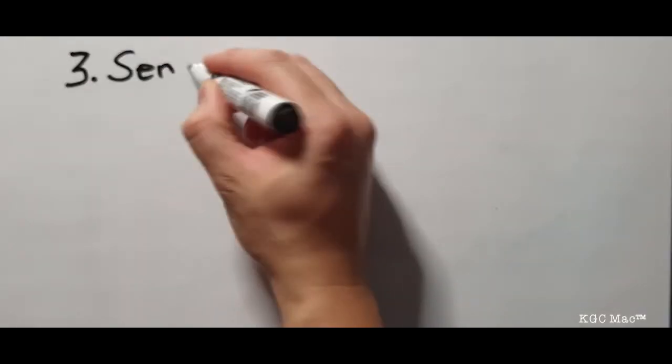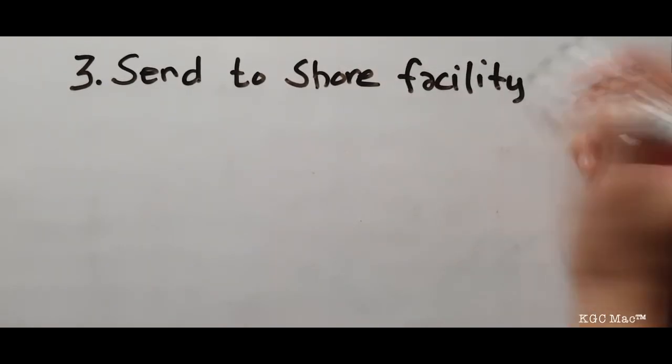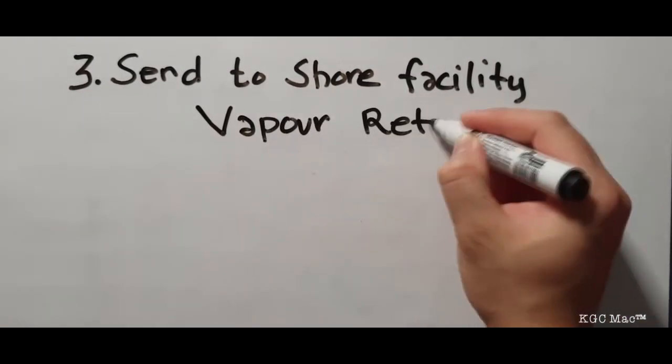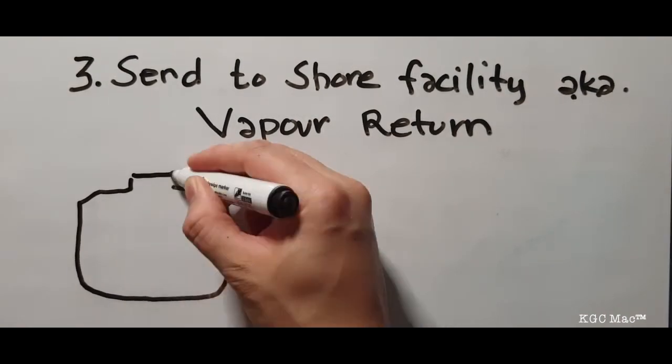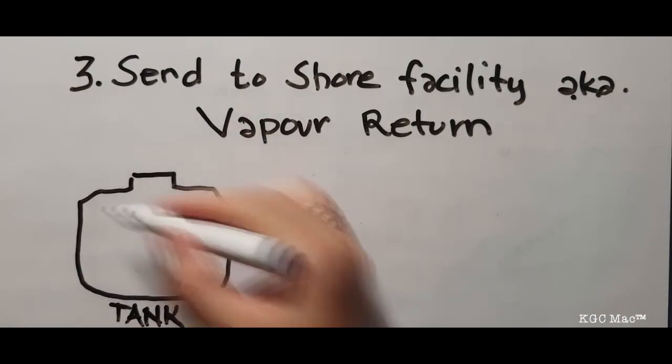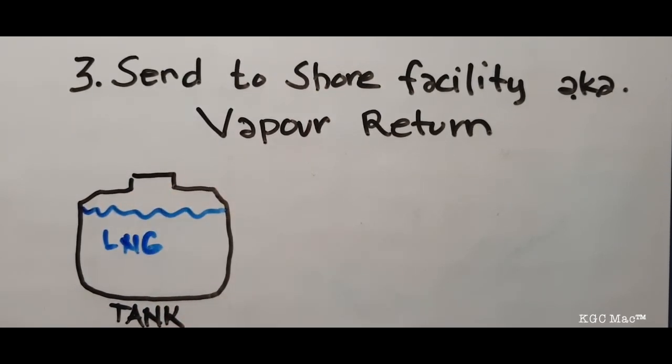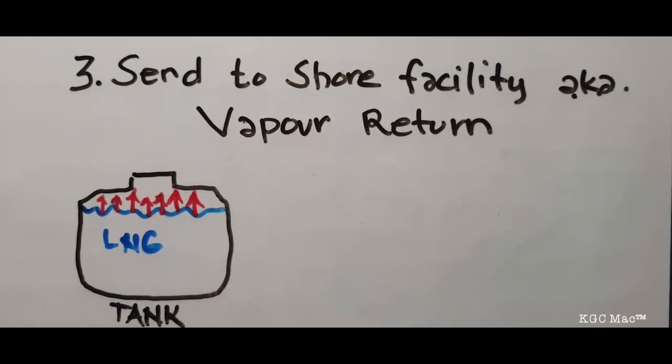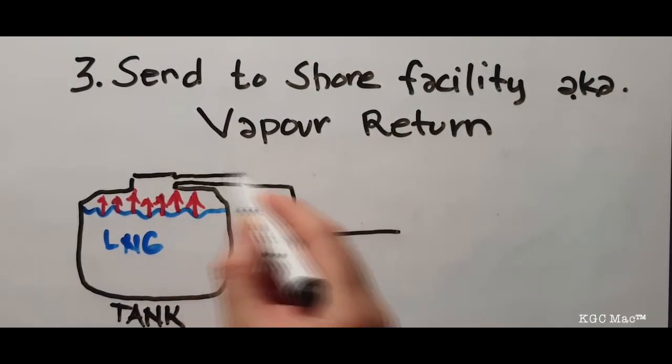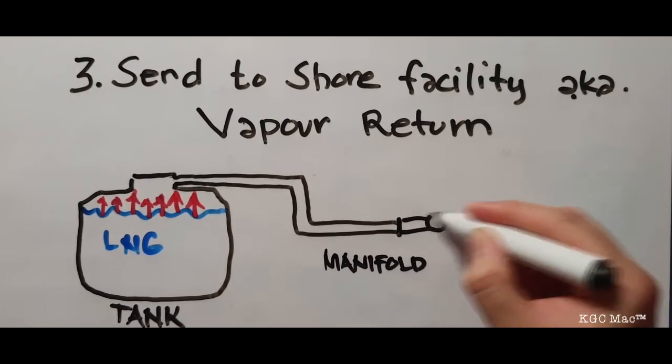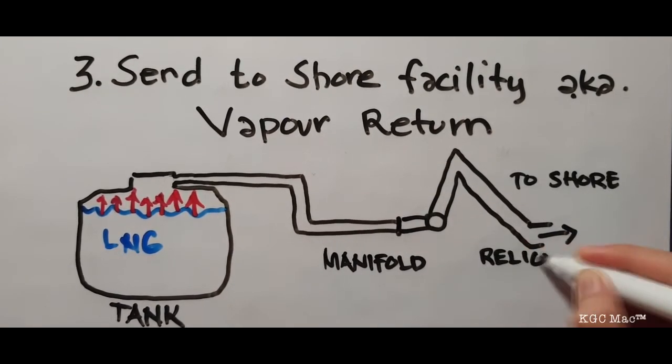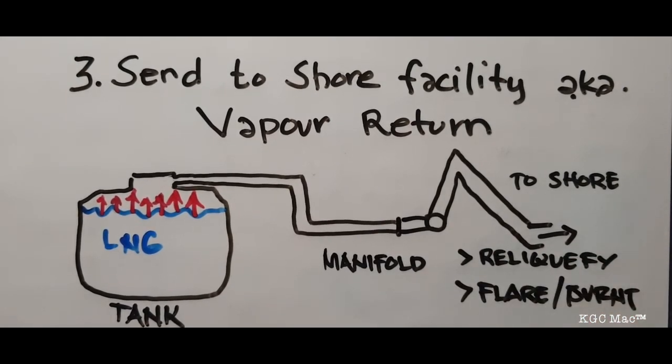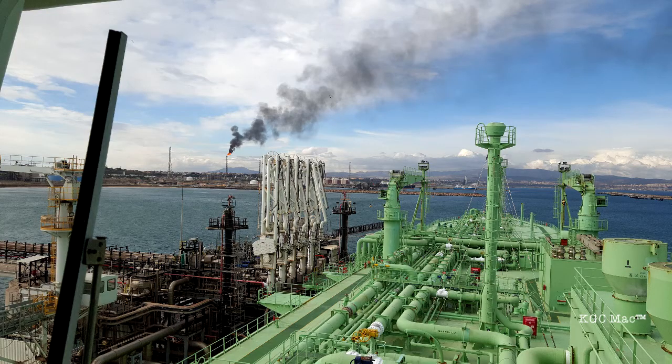The third one is sending it to shore facilities. When vessel is alongside in port, we can control the tank pressure by directing the flow of the built-up pressure of the tank to the shore facility. This usually happens during cargo operations. The shore facility will either reliquefy it or just burn it. That's why in some terminals you will see a flare burning, because they are just burning it.